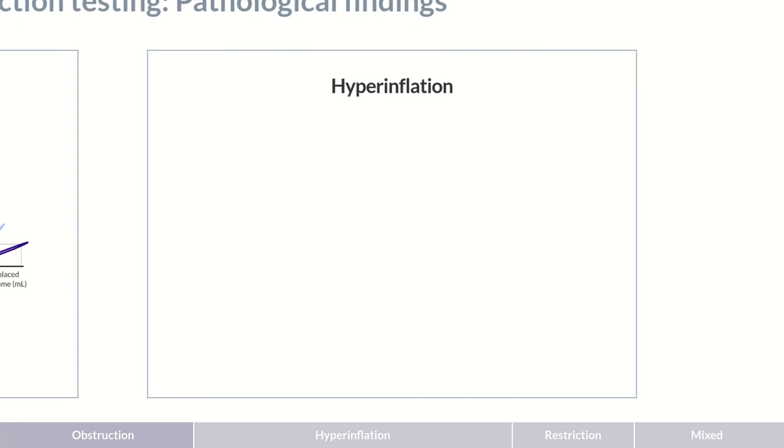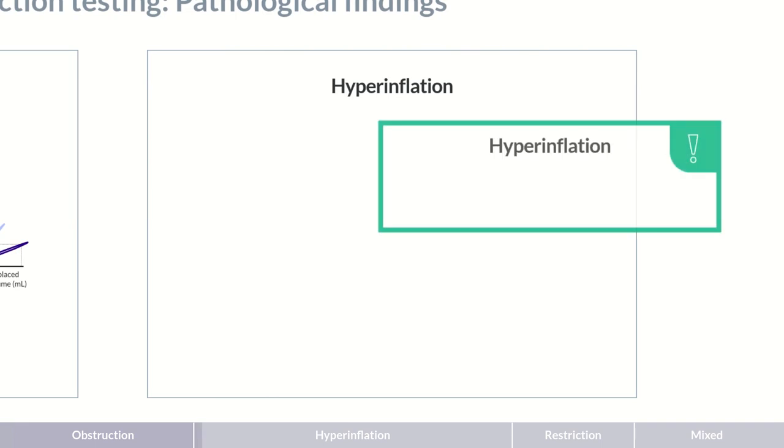A potential effect of pronounced obstruction is hyperinflation of the lungs. On rare occasions, this can also occur independently of an obstruction. A characteristic of hyperinflation is the change in lung volumes. The vital capacity decreases in favor of the residual volume. In addition, the FEV1 to FVC ratio is normal or decreased, depending on whether or not there's an additional obstruction.